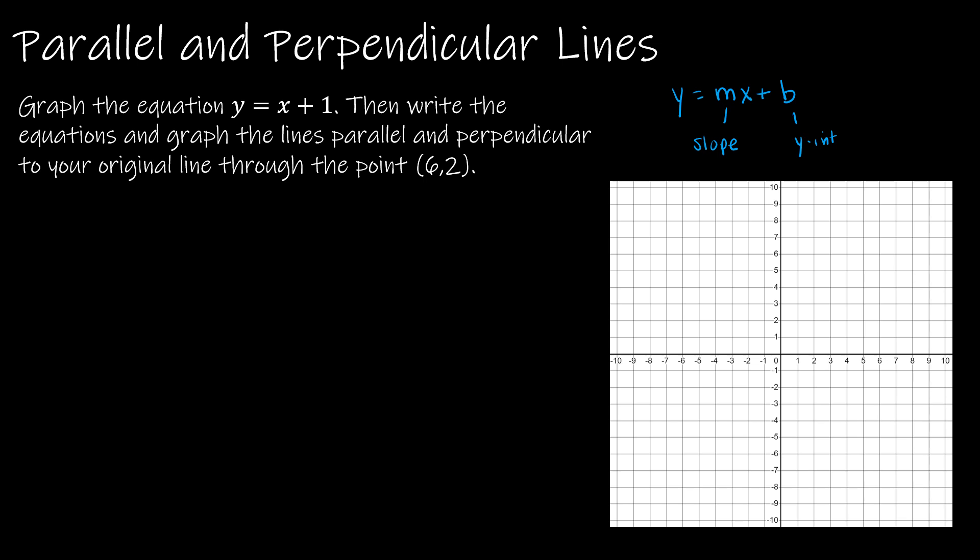This question asks us to put a lot of things together, pretty much everything we've reviewed in this video. Point-slope form, slope-intercept form, and then also parallel and perpendicular lines, which we haven't done yet. First I'm going to graph the equation y equals x plus 1. That means I'm starting at positive 1, and my slope is 1 over 1. So that just means up 1 over 1, up 1 over 1.